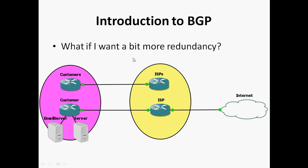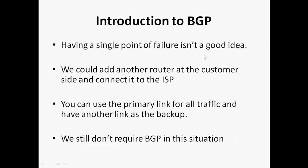Third scenario: what if I want a bit more redundancy, because a single point of failure is not a good idea. In the previous two scenarios, the customer is connected to the ISP via only one link — if that link goes down, the customer loses internet completely. I will add one router on the customer end as well as the ISP end and connect another cable. If one link goes down, traffic will go via the other link. We could add another router at the customer side and connect it to the ISP — use the primary link for all traffic and have another link as backup. We still don't require BGP in this situation.